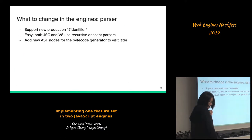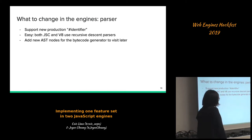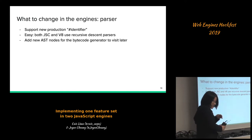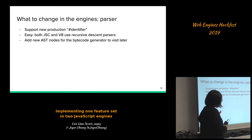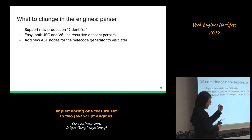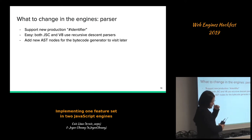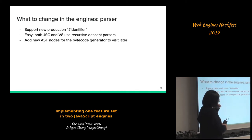In particular we need to support the new production for hash identifiers — that's for the private names. This is relatively straightforward in both JavaScriptCore and V8 because they both use recursive descent parsers, so you just need to find the correct place and add some code there. We also need to add new AST nodes so that the bytecode generator can visit them later.